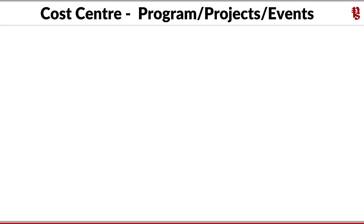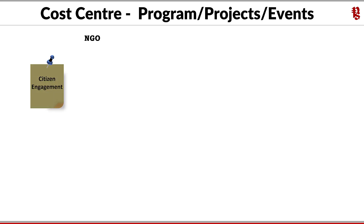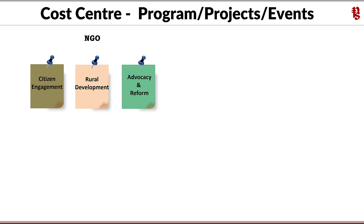Now let us take an example of how a program, project, or event can be a cost center for tracking. Let us take an example of an NGO which wants to know the total cost incurred for their various programs. The cost center will be handy here. The indicative cost centers for NGOs could be: programme or project of citizen engagement, programme or project of rural development, and programme or project of advocacy or reform.